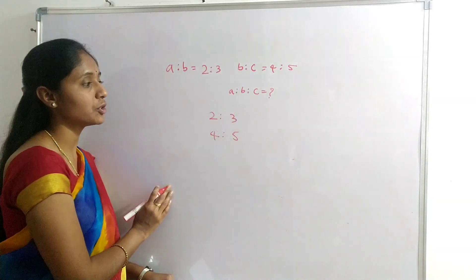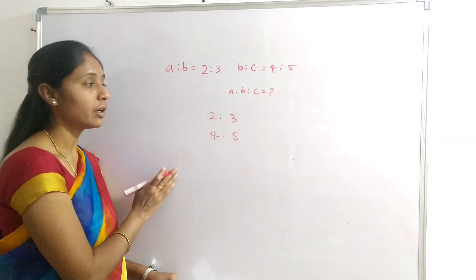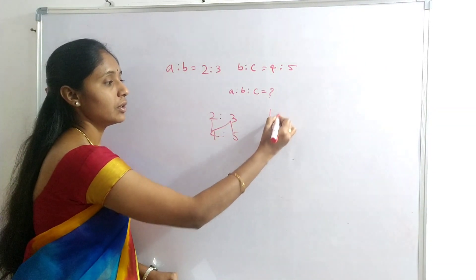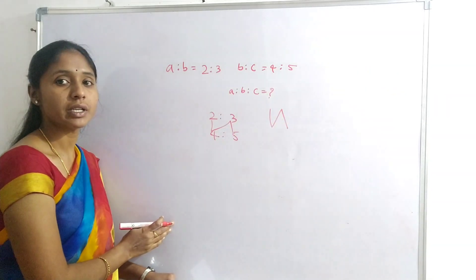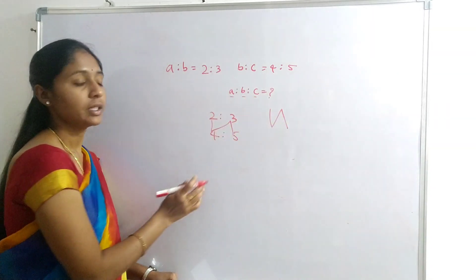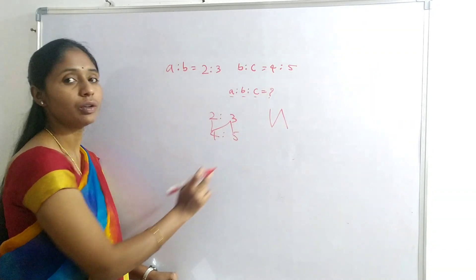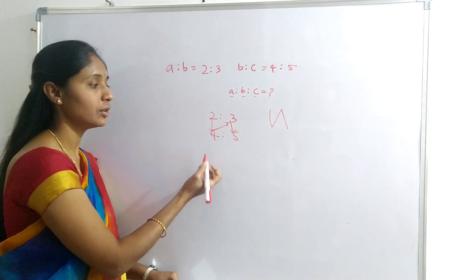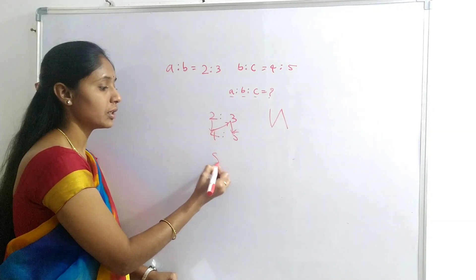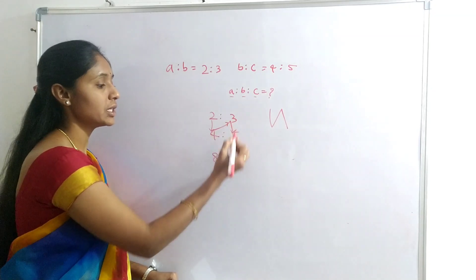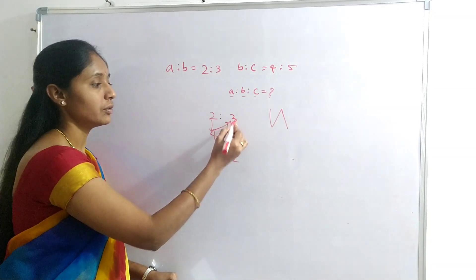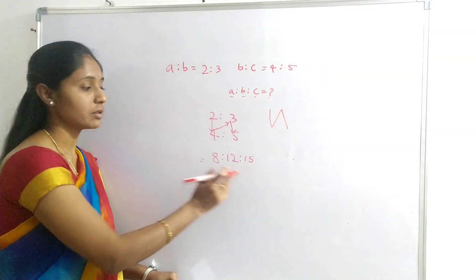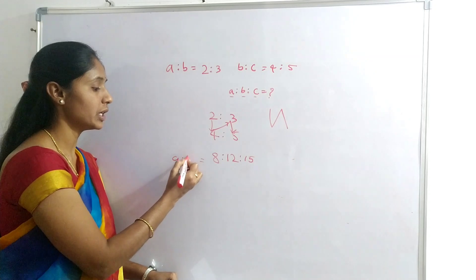We need to find A:B:C. Here, one trick we can follow is the Reverse N rule. For A:B:C with 3 factors, we follow this reverse N rule and multiply likewise. 2×4 = 8, 4×3 = 12, 3×5 = 15. So A is to B is to C is 8 is to 12 is to 15.